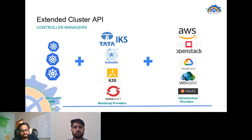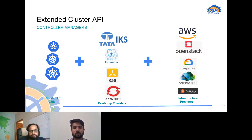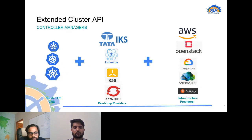As some of you might already be aware of Cluster API, it is basically a single set of APIs that has been open-sourced from the Kubernetes community, and it is being used heavily now to spin up clusters on any cloud provider. What you see on the left hand side - the first block - is the extended Kubernetes APIs, which are CRDs, using which from upstream we can spin up kubeadm clusters onto any cloud provider.